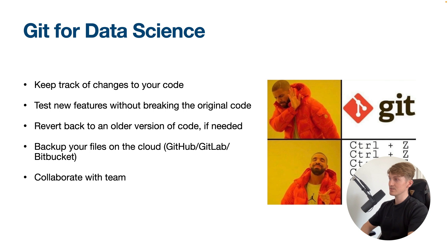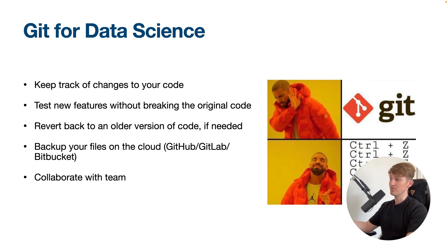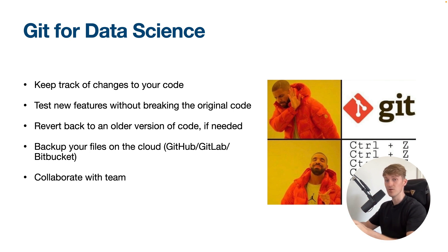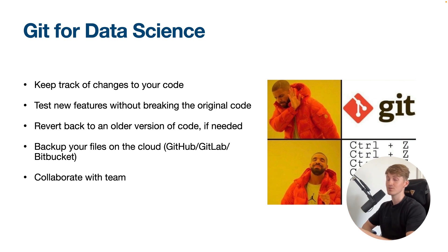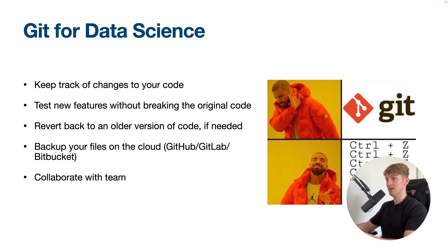Why do we want to use Git for data science? First, we can keep track of changes to our code. We can test new features without breaking the original code. We can refer back to all versions of the code if needed, and we can back up our files on the cloud using GitHub, GitLab, or Bitbucket. A good thing to know — something that confused me in the beginning — is that Git is not the same as GitHub. Git is a version control system that lets you manage and keep track of your source code history, and GitHub is a cloud-based hosting service that lets you manage your Git repositories.